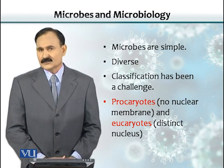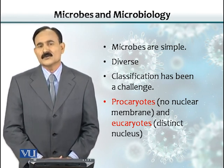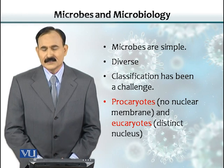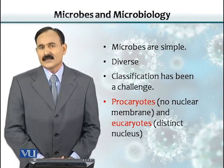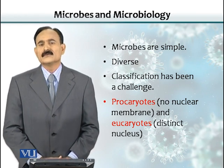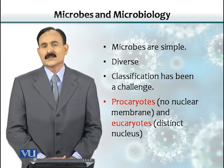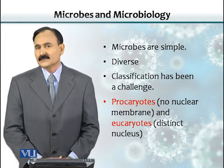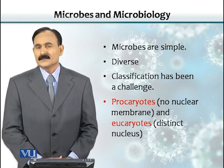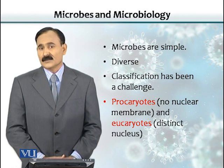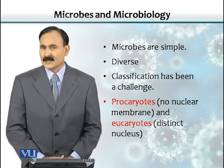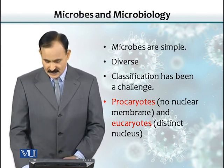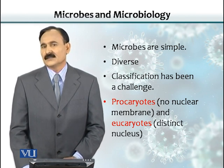Microbes are very simple in their structure. If you compare a microbe with an animal or a human, we see that animals and humans are multicellular, and those cells are arranged into tissues, and then the tissues are arranged into organs. But because microbes are simple and mostly unicellular, they are not organized like typical multicellular organisms such as humans or animals. So they are very simple, but they have various kinds among them.